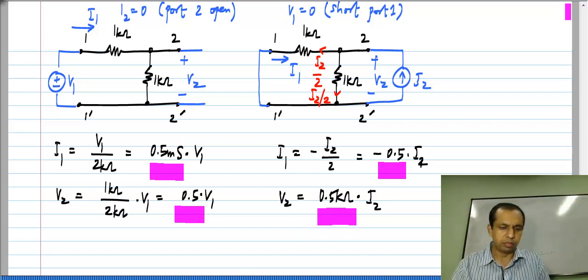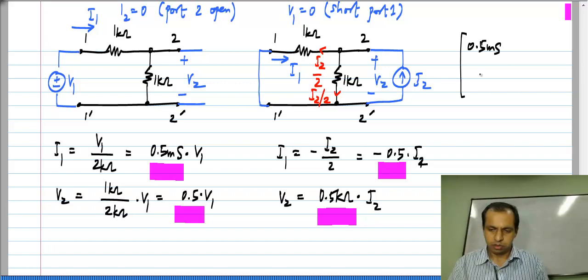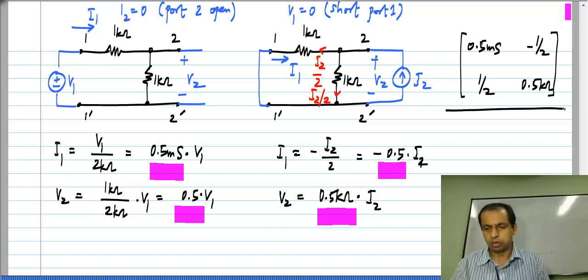So, the G parameter matrix for this particular circuit is half a millisiemens, half, minus half, and half a kilo ohm, quite simple.